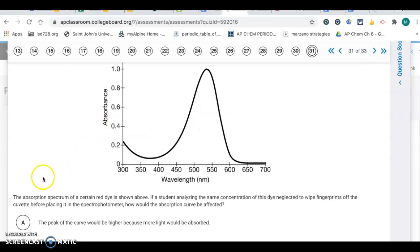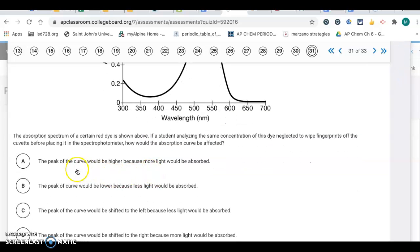Question 31. The absorption spectrum of a certain red dye is shown above. If a student analyzing the same concentration of this dye neglected to wipe fingerprints off the cuvette before placing it in the spectrophotometer, how would the absorption curve be affected? If the cuvette is not clean, that means the light will not be transmitted as well. So all these readings would be too high. The peak of the curve would be higher because more light would be absorbed. The whole curve would be higher, but yeah, definitely the peak also. Letter A.